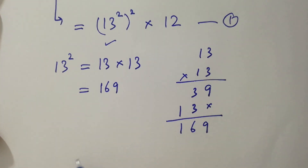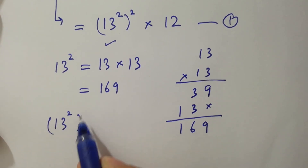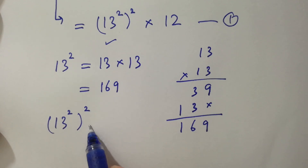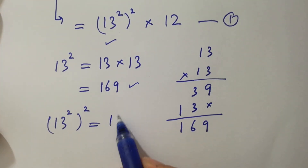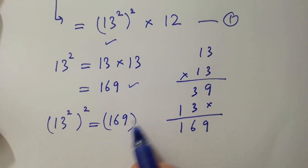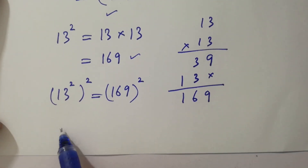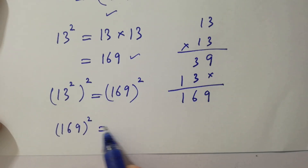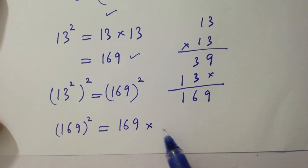Then, 13 squared to the whole power 2 equals 169 to the power 2. And 169 to the power 2 is 169 times 169.